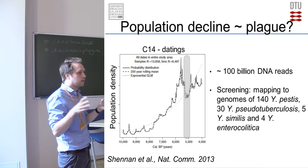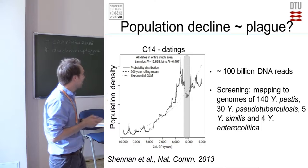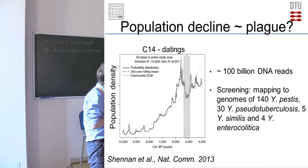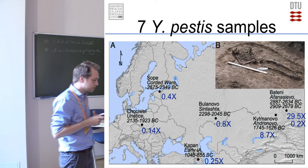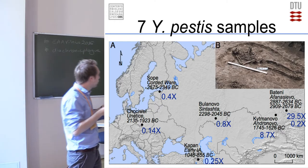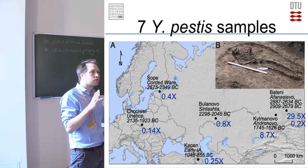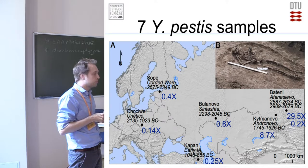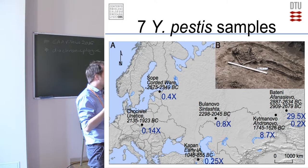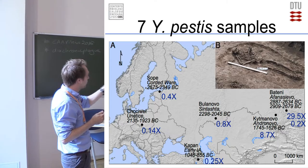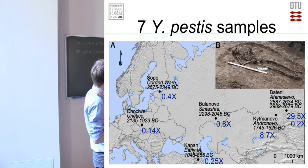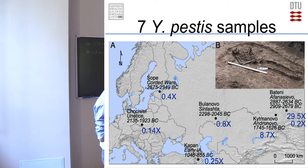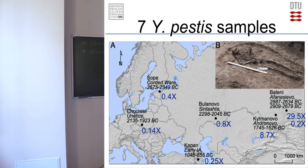We had in total 100 billion DNA data points — a lot of data — and we then started screening this for plague. We did this by comparing to all of the known Y. pestis genomes, but also pseudotuberculosis genomes and some of the more distant species. What we were then able to find was plague in seven out of these 100 samples, which is quite astonishing — a quite large fraction. You also see they are distributed over a large space, all the way west to Poland and all the way east to the Altai Mountains.